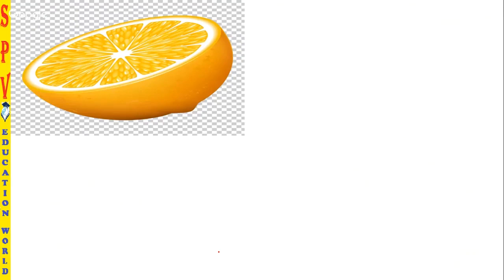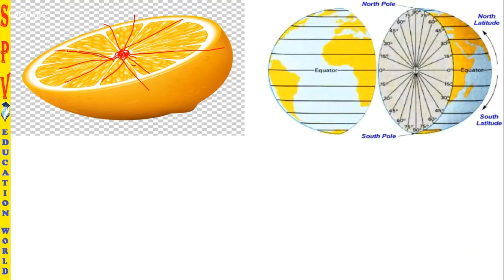Let me show you using an orange analogy. If you slice an orange in half, you can observe lines passing from the center — this is similar to how we view the earth's latitudes. From the center of the earth, we take angles: the equator is taken as zero degrees, the line perpendicular to it toward the north pole is 90 degrees, and the sub-middle lines are subdivided between them.